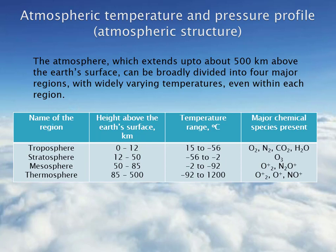Then the second layer, which is stratosphere, its height is from 12 to 50 kilometers, temperature range is minus 56 to minus 2 degrees celsius, and the major chemical species is ozone.